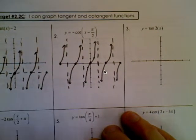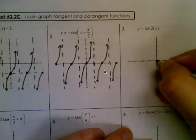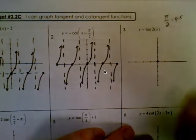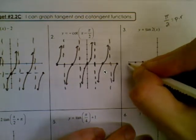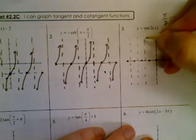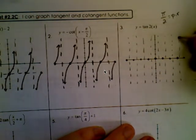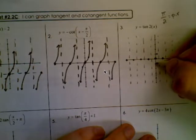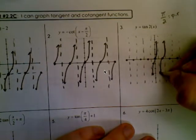Number 3: y equals tangent 2x. There's no vertical shift and no horizontal shift. Tangent starts on the midline. The period is pi over b, and because b is 2, the period is pi over 2. So every pi over 2 we get one of these marks, and halfway between we get the asymptotes. Tangent goes upward, so we go up 1 halfway to the asymptote, down 1 halfway to the asymptote to get the S-curve. I'll just draw two periods.